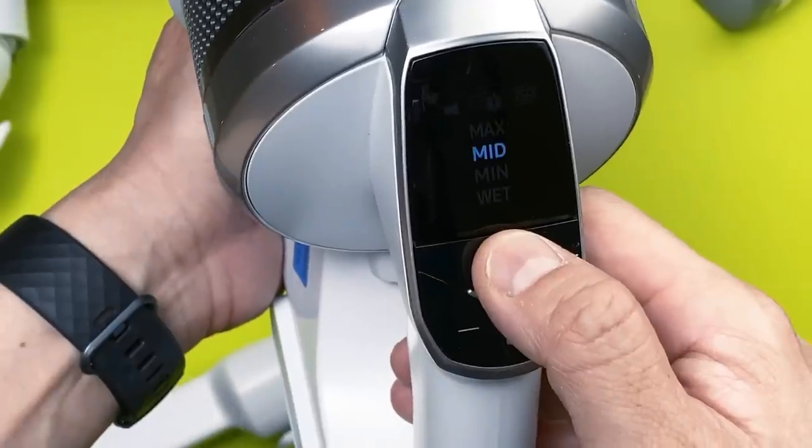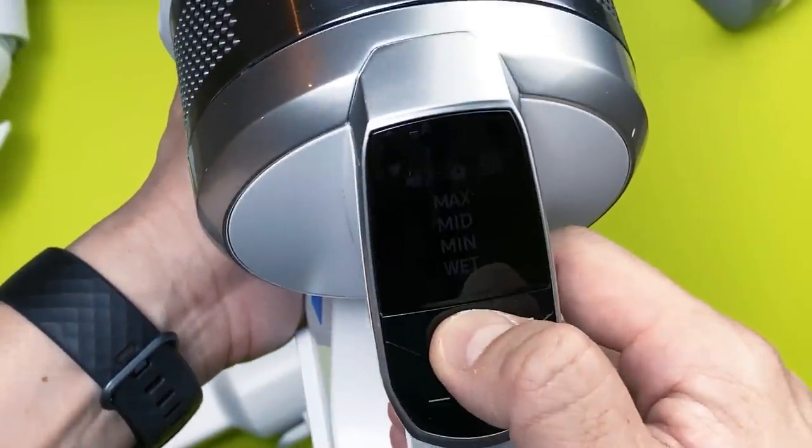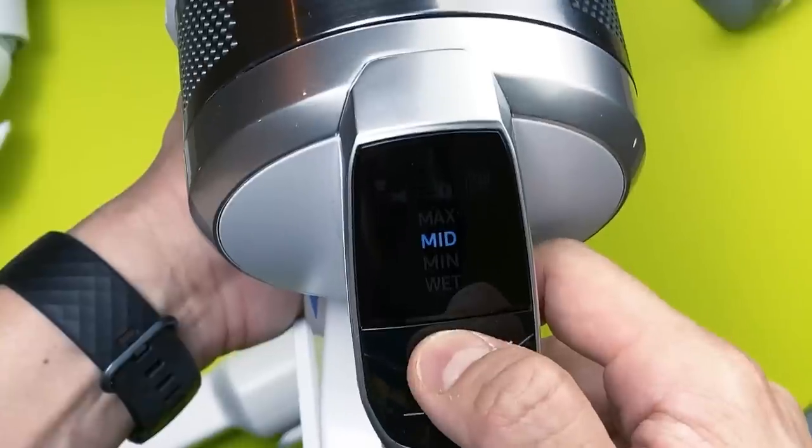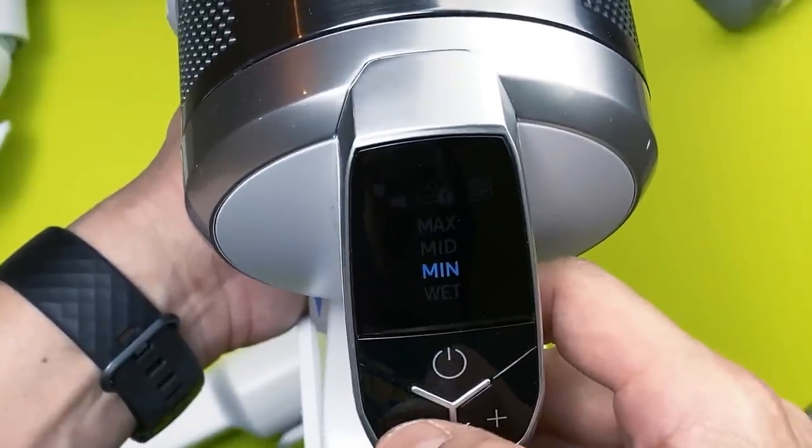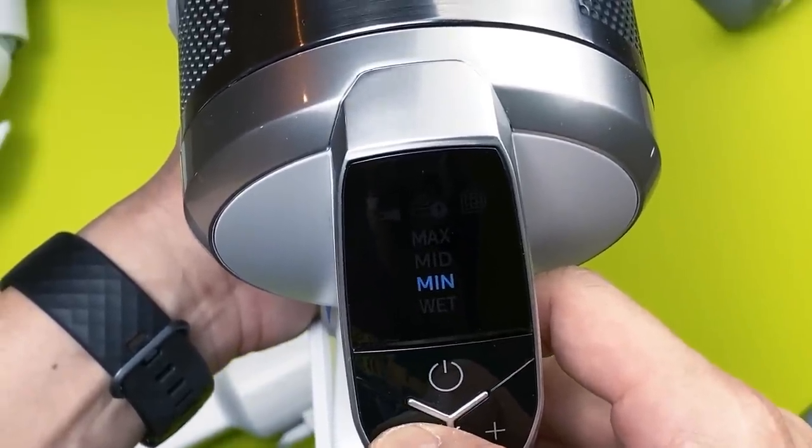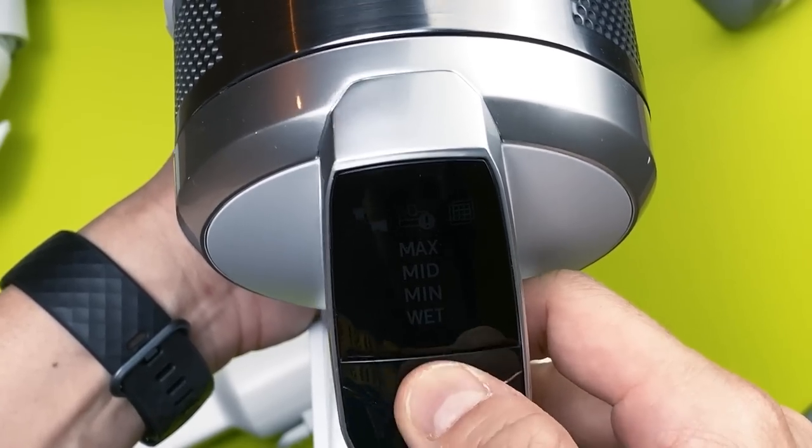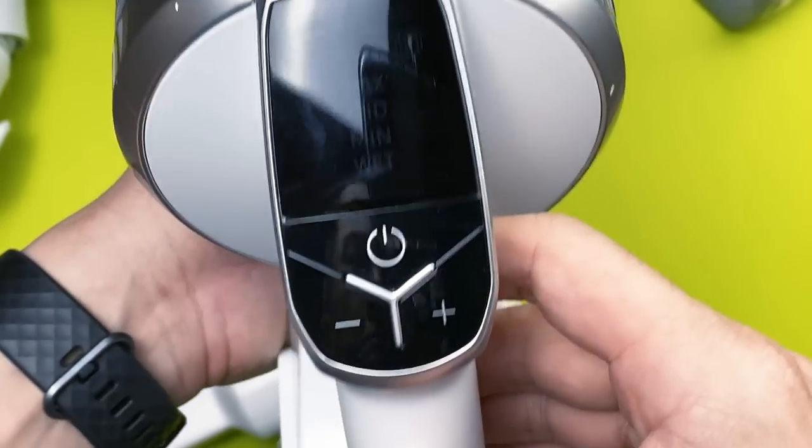Like the Dyson V11 I have, the JET70 also comes with a digital display. It shows the different user modes, power level, type of brush you're using, as well as status updates. It will also alert you of any brush problems or blockages.